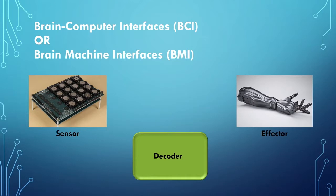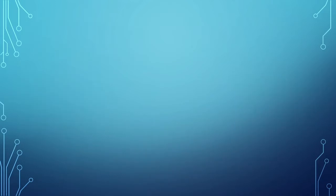The sensor is used to detect and record neural activity, whereas the decoder is a mathematical algorithm which converts these detected neural signals into command signals, and the effector is an external device like a robotic arm or a computer cursor which is driven by the command signals.